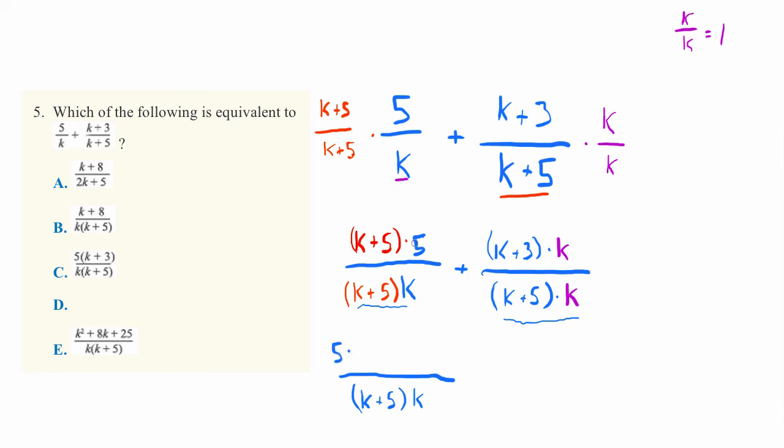So 5, this was 5 times k. So 5 times k up here. And then we can say plus 5, 5 times 5. So plus 25.